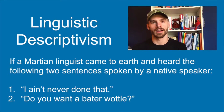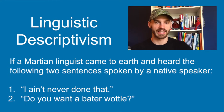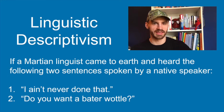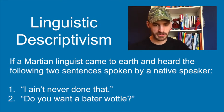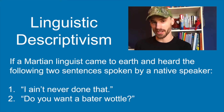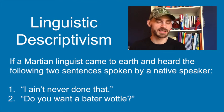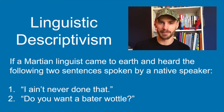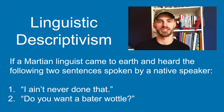A common thought experiment in linguistics is the Martian. If a Martian scientist came down to earth and heard the following two sentences spoken by a native speaker, which one would he consider to be an error? Assuming the Martian is a good scientist who has observed English and written down the rules that define it — he hears one person say, 'I ain't never done that before,' meaning 'I have never done that.' Then the Martian hears someone else say, 'Do you want a butter waddle?' intending to mean 'Do you want a water bottle?' — which is something a friend actually said to me one time.